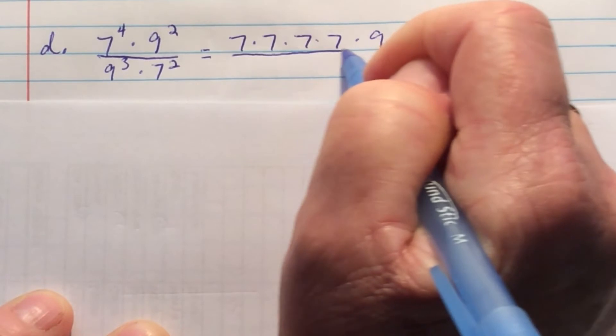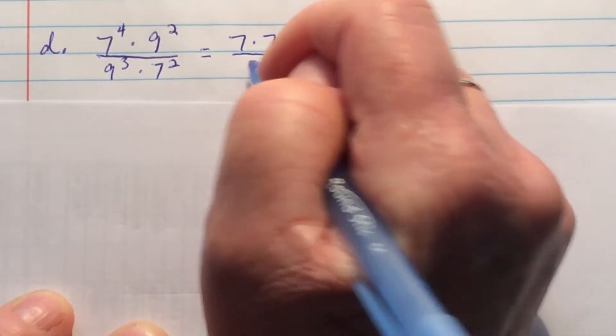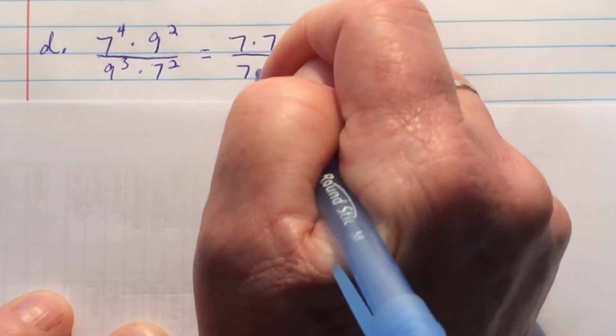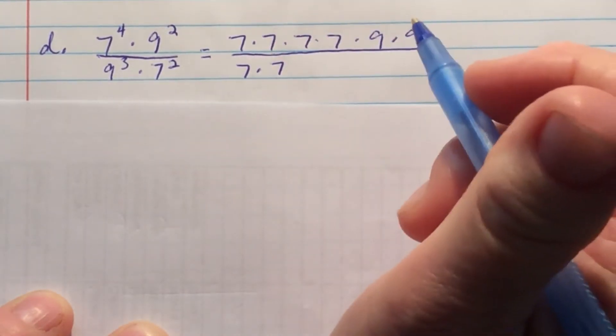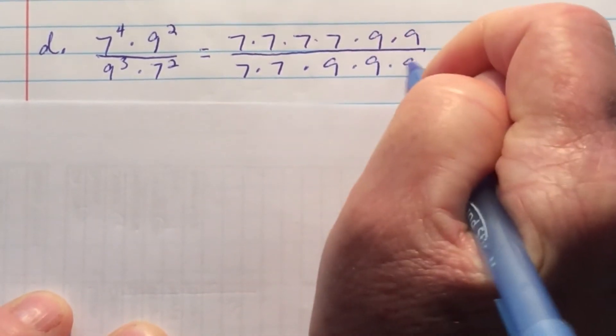And on the bottom, I'm going to use the commutative property and move the 7 squared to the front: 7 times 7. And then I have 9 cubed: 9 times 9 times 9.